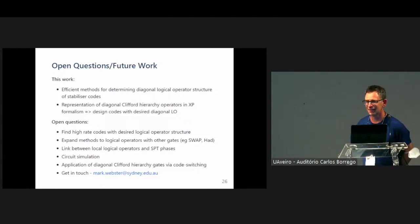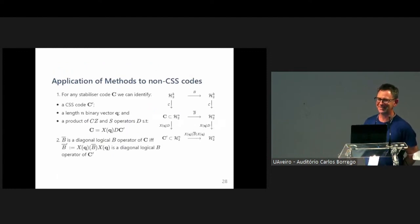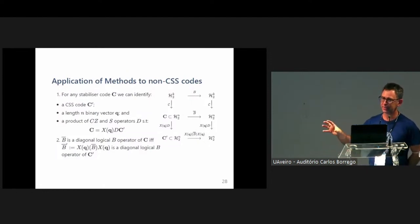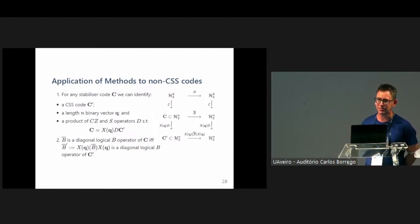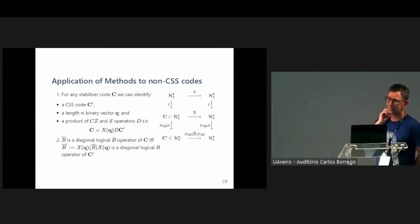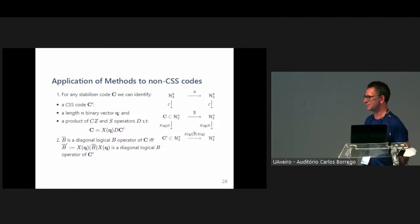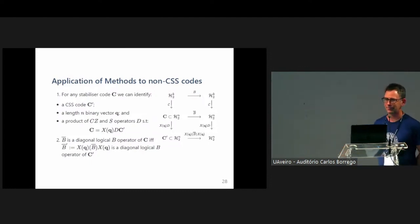Question from audience: All these algorithms you propose — they only work with CSS codes, so they don't work with any kind of codes? Response: They certainly do work more broadly. Basically, given a stabilizer code, I can show you a CSS code on the same number of physical qubits that maps to it, where I understand the logical operator structure, and I just convert back to the stabilizer code by applying some conjugation of X operators, which gives the same logical actions. There's a method for doing that in the appendix of the paper. And that conversion preserves transversality.